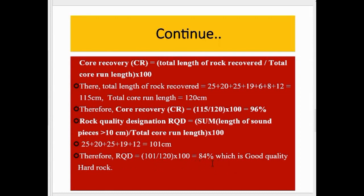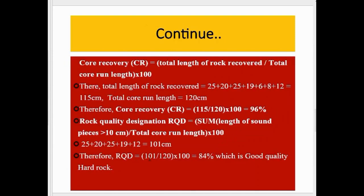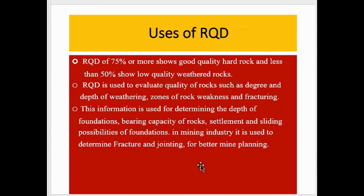84% is actually a good quality hard rock. Now see the table that defines RQD percentage bands. If RQD is less than 25%, the rock is very poor or completely weathered. If RQD is 25 to 50%, it is poor. If RQD is 51 to 75%, it is fair. 76 to 90% is good, and 91 to 100% is very good or fresh rock.